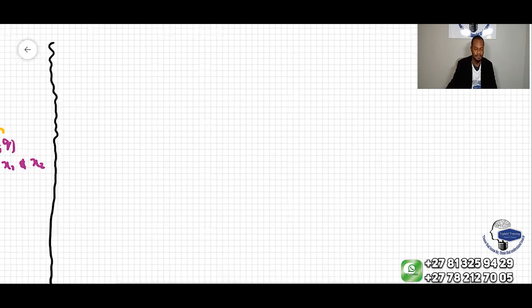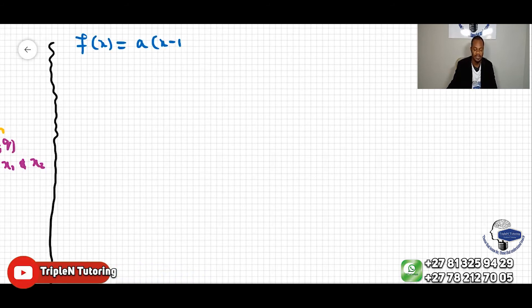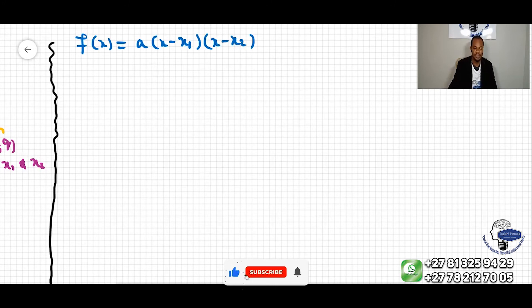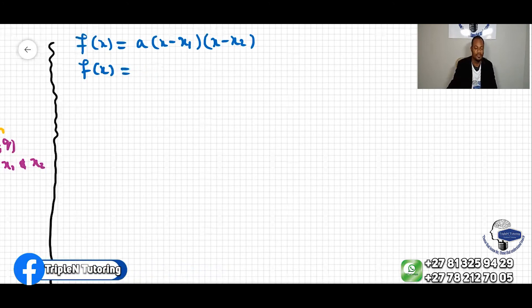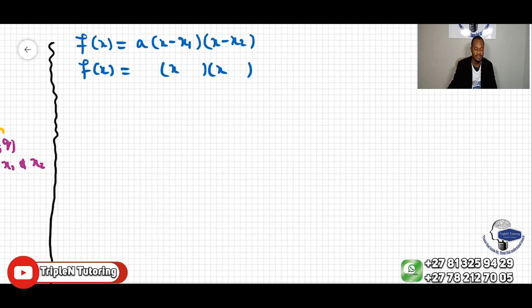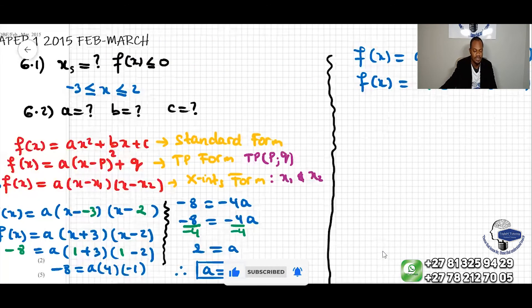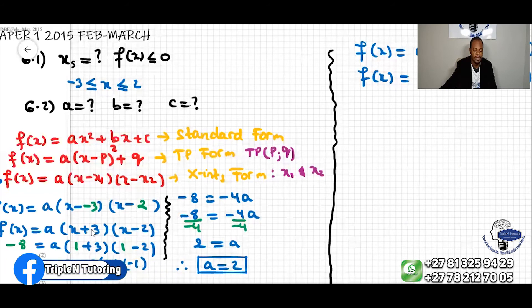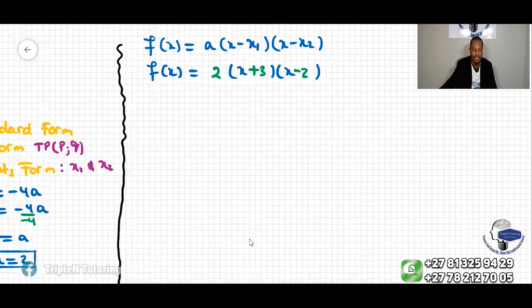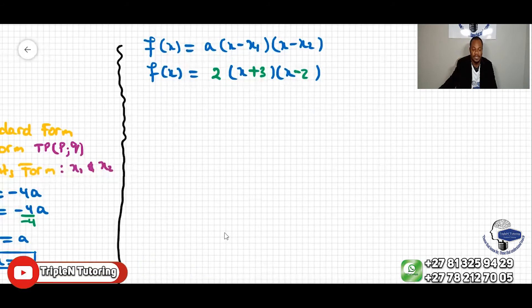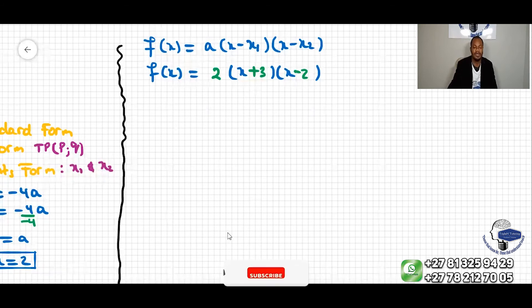We had f(x) was equal to a(x - x₁)(x - x₂). And then we found the value of A is equal to 2, and then we had (x + 3)(x - 2). Now we can still sub the value of A. We don't need to sub anything, we can just expand this now.